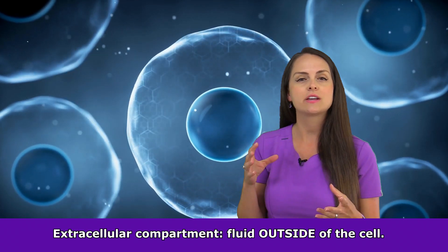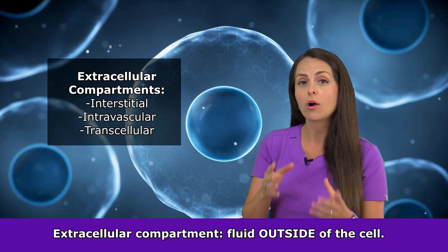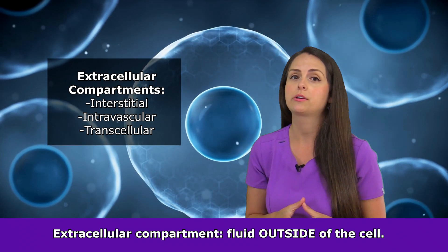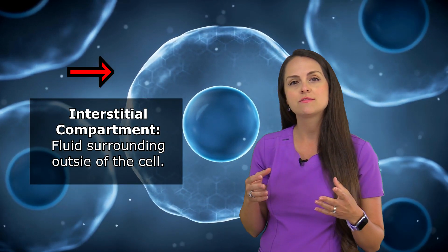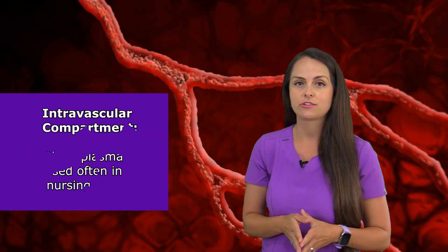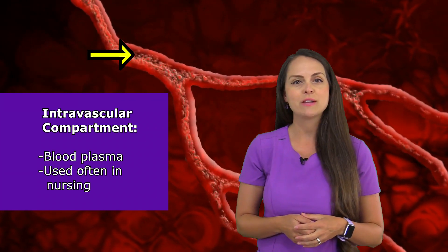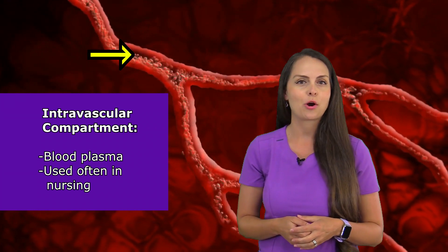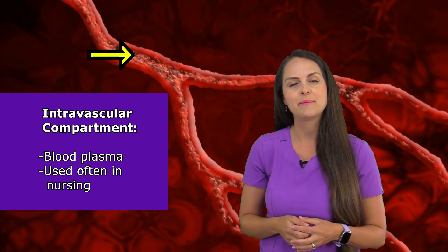We can divide the extracellular compartment into other sections. Part of it is the interstitial compartment — the fluid found around those cells, outside and in between them. Then we have the intravascular compartment, which is our blood plasma. As nurses, we access this compartment a lot whenever we're starting IVs.